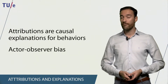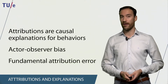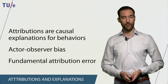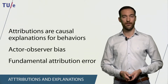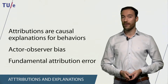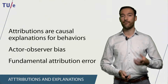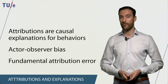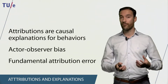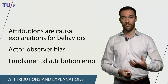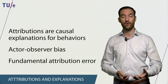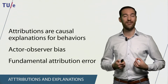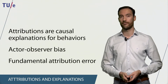One specific instance of the actor-observer bias is what we call the fundamental attribution error. The fundamental attribution error is the tendency for an observer to underestimate situational causes when seeing the behavior of an actor, and overestimate internal causes of that behavior.